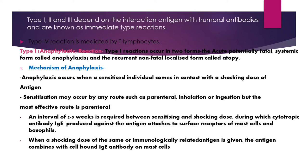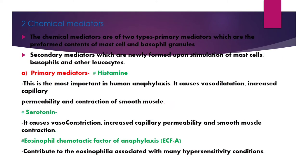Sensitization may occur by any route such as parenteral, ingestion, or inhalation, but the most effective route is parenteral. An interval of two to three weeks is required between the sensitizing and the shocking dose. During this period, the cytotropic antibody IgE produced against the antigen attaches to the surface receptors of mast cells and basophils. When a shocking dose of the same or immunologically related antigen is given, it combines with cell-bound IgE antibody on the mast cell.